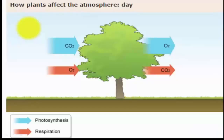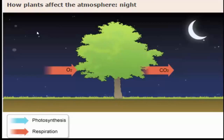By day, plants use carbon dioxide and produce oxygen through photosynthesis, while also absorbing oxygen and producing carbon dioxide through respiration. At night, photosynthesis is not active, so only respiration is occurring, meaning the plant absorbs oxygen and releases carbon dioxide.